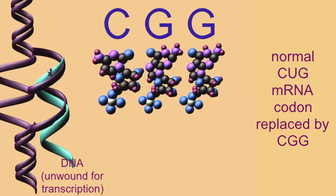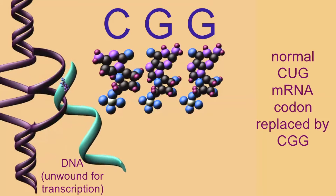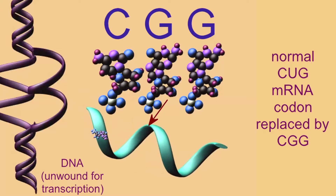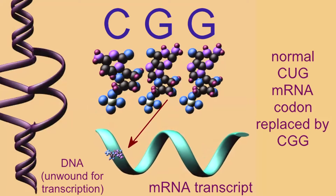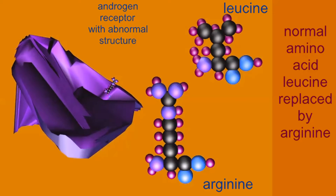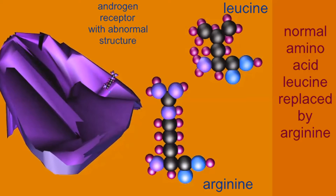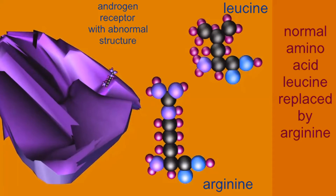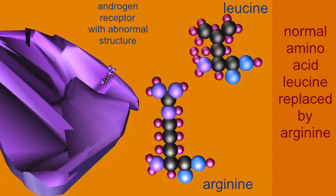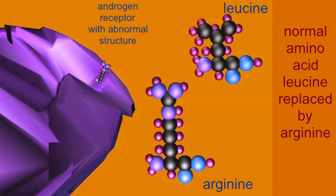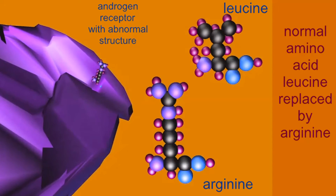This change in the DNA changed the RNA transcript made from the DNA, so that the triplet C-U-G that most people synthesize was replaced in me by the triplet C-G-G. This change in the RNA resulted in a change in the amino acid sequence of the protein translated from the RNA. Instead of leucine, which most individuals synthesize at site 707 in the androgen receptor protein, I insert the amino acid arginine.